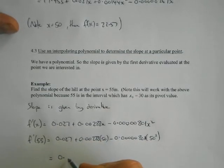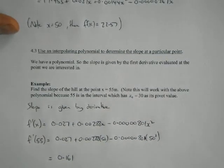which equals 0.161 meters per meter, in this case, as the units, because both the x and y axis have been measured in meters. So it's got a slope of 0.161, slope of the hill at that point.